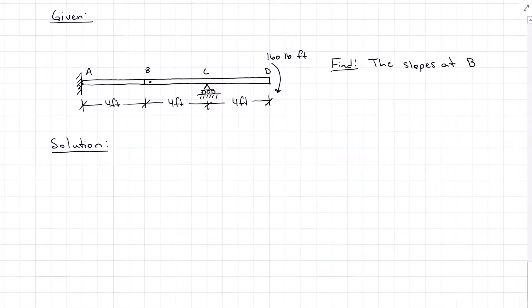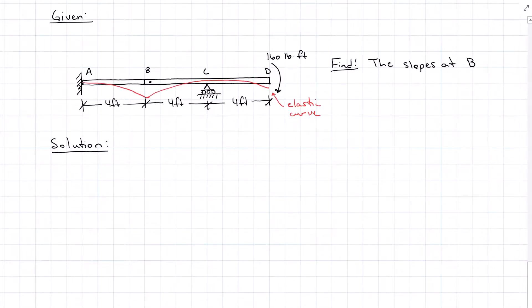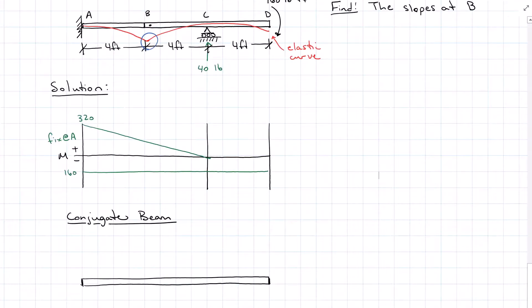Now we're given a propped cantilever with a fixed end at A, hinge at B, roller at C, and a free end loaded with a moment of 160 pound-feet at D. We want to find the slopes at B — and that's not a typo, there are two slopes. The elastic curve at the hinge at B will have two different slopes. Our solution starts with the moment diagram by superposition fixed at A, then we draw the conjugate beam.